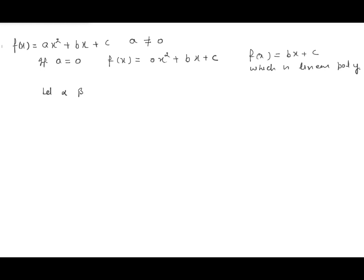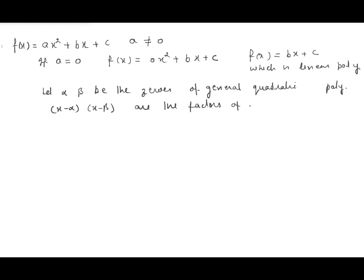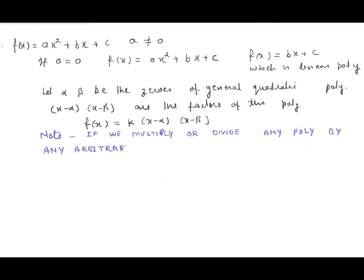Let alpha and beta be the zeros of the general quadratic polynomial. Then x minus alpha and x minus beta are the factors of this polynomial. So f(x) can be written as k times (x minus alpha)(x minus beta). The reason k is mentioned is: if we multiply or divide any polynomial by any arbitrary constant, the zeros of the polynomial don't change.